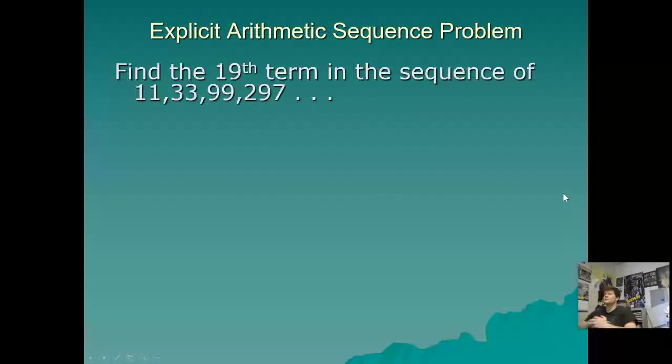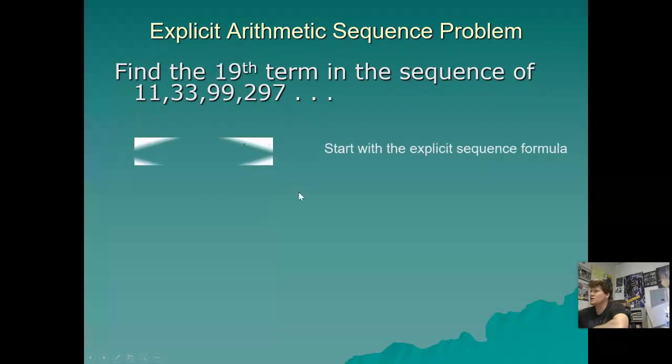Let's move on. Taking a look at another example. This time, we're actually going to find the term using the explicit formula. You have find the 19th term in the sequence of 11, 33, 99, 297. This is geometric because we're multiplying to get to the next number. The common ratio, what we're multiplying by every time, is positive 3. So we know what our first term is. It's 11. We know what the common ratio is. We're timesing by 3 every time. And we know what n is. It's 19. So let's plug them into our formula.